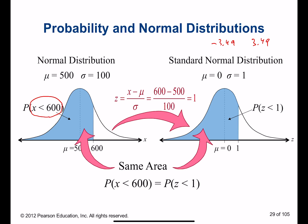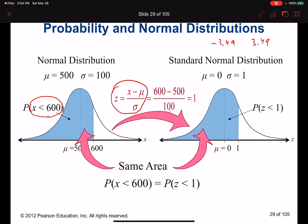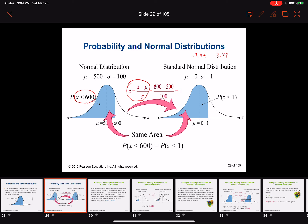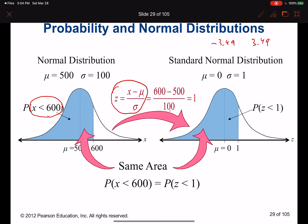The formula for z-score is z = (x − mu) / sigma, where x is our value, mu is the average, and sigma is the standard deviation. Plugging in: (600 − 500) / 100 = 1. So x equal to 600 matches a z-score equal to 1.